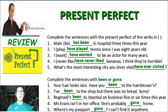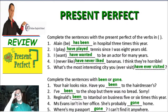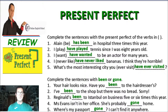Present perfect examples: Number one: "Elaine has been in hospital three times this year." Number two: "I have played tennis since I was eight years old." Number three: "I have wanted to be an actor for many years" — I would have loved to be an actor; I chose the wrong profession. Number four: "I have never liked bananas — I think they're horrible." Number five: "What's the most interesting city you have ever visited?" — For me, Rio de Janeiro.